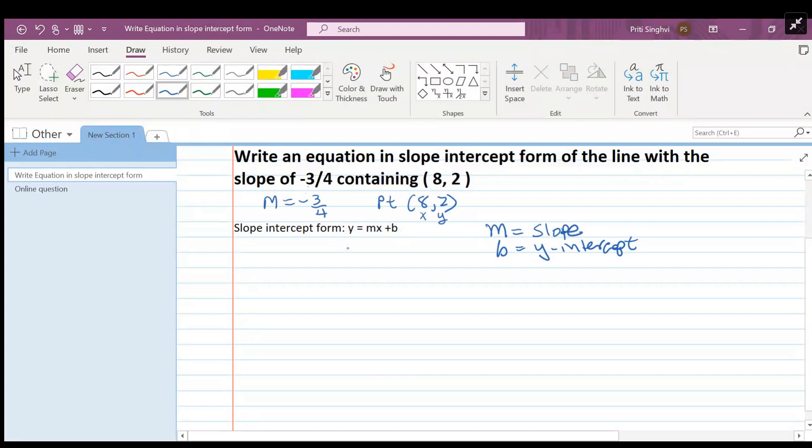So y in this problem is two, equals the slope which is negative three-fourths (which is m), times x which is eight, plus b. Our goal is to solve for b. Two equals negative three-fourths times eight.